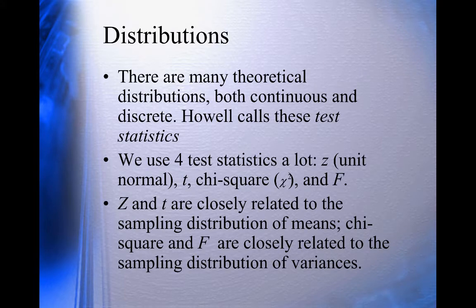There are lots of theoretical distributions, both continuous and discrete. You've seen the binomial already — it's an example of a discrete distribution. There are four test statistics we use a lot: z, the unit normal; t; chi-square; and F. Z and t are related to the sampling distribution of means, while chi-square and F are related to the sampling distribution of variances.